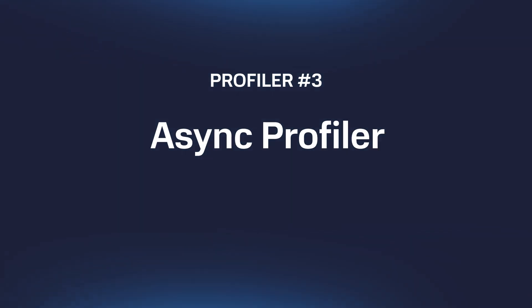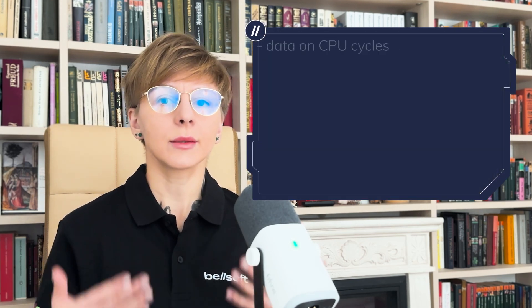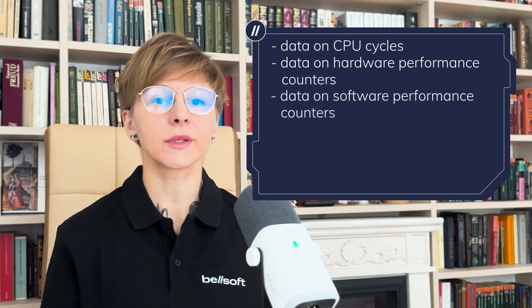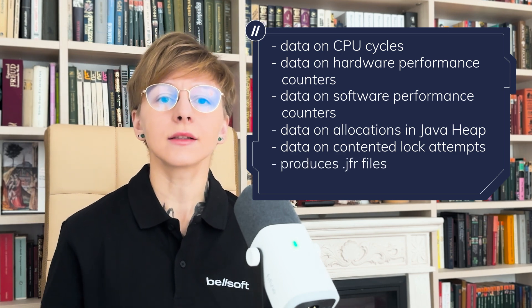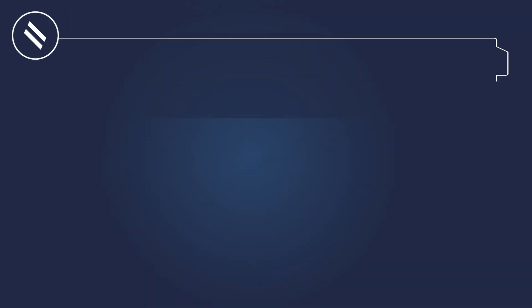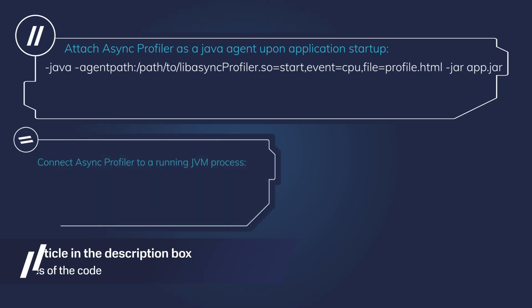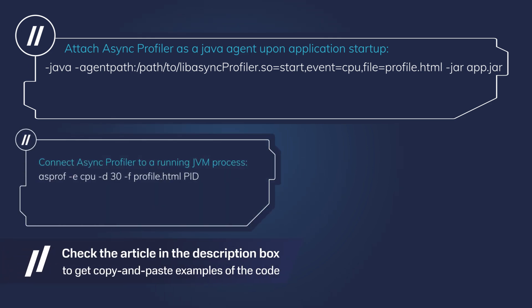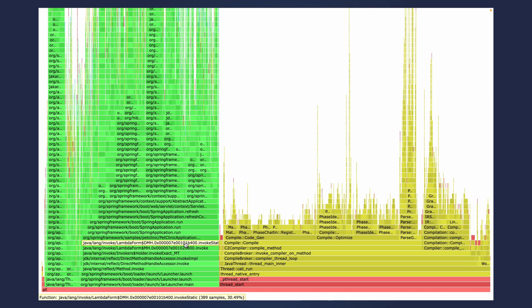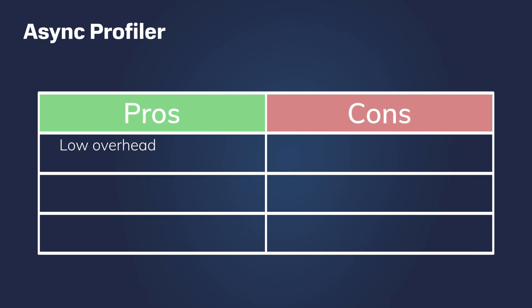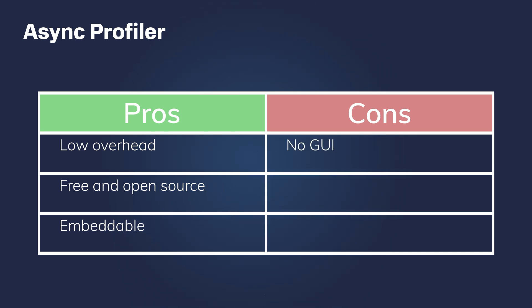Async Profiler is a free and open-source profiler that collects data on CPU cycles, hardware and software performance counters, allocations in Java heap, and contended lock attempts. It can produce JFR files and flame graphs. You can attach it as a Java agent at application startup or connect to a running JVM process at an arbitrary point in time. You can analyze JFR files in JDK Mission Control and flame graphs in the browser. Async Profiler has very low overhead, it is free and open-source, and it can also be embedded into other solutions. However, there is no graphical user interface and it is not available for Windows.